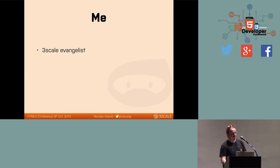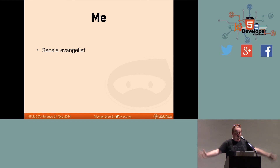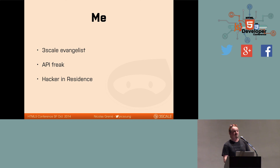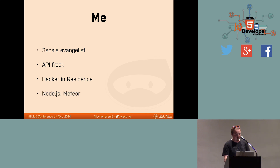Just a bit about myself before we get started. I'm working for 3Scale — we are an API management company. So I eat APIs, I code APIs, I dream APIs. We're helping companies build their developer program. I'm a real API freak. Before getting into 3Scale, I was going to a lot of hackathons, working with different APIs and different schemas. I've seen bad and I've seen good stuff, and today my job is to make everybody go on the right path. My real title is Hacker in Residence, which means I have to build and break stuff and create new projects. My stack recently moved from the Ruby world to Node.js and specifically Meteor.